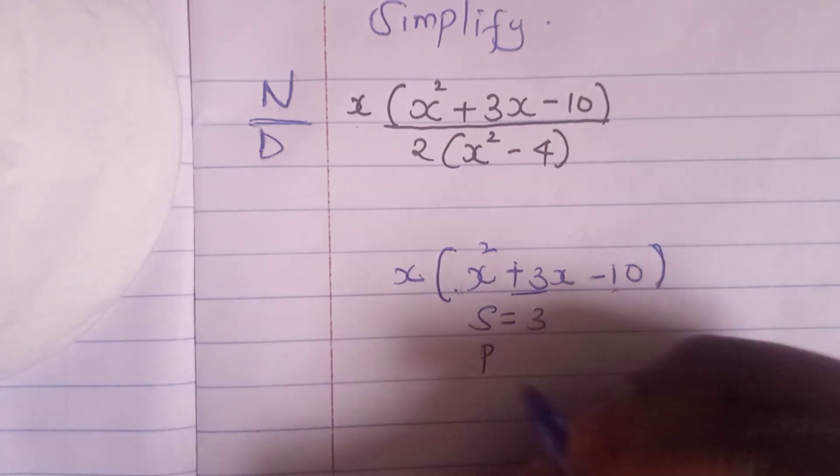So x squared plus 3x minus 10 is our quadratic equation and I want to solve it using factorization method. So I'll begin with sum and my sum is my middle term here which is 3. And my product, I am taking the coefficient of x here which is 1 and multiplying it by c. So I'm getting 1 times negative 10. This gives me negative 10.